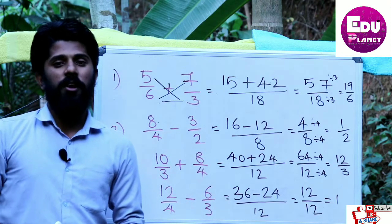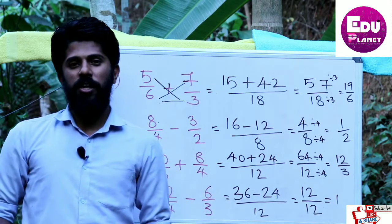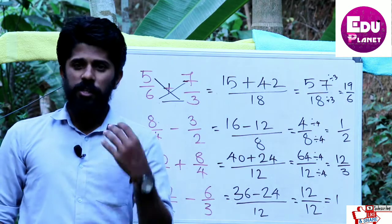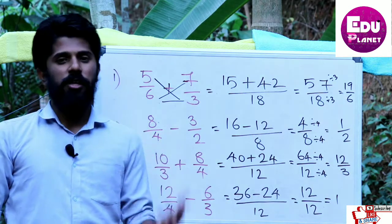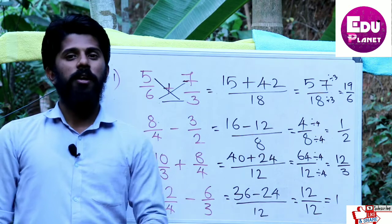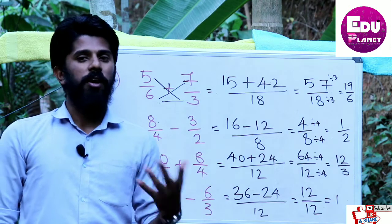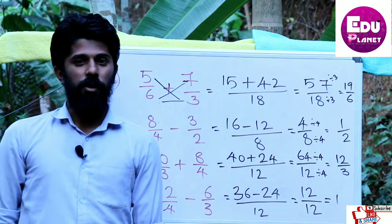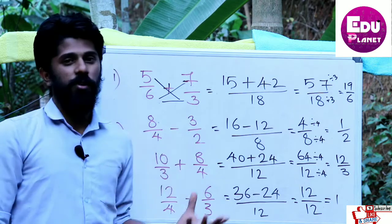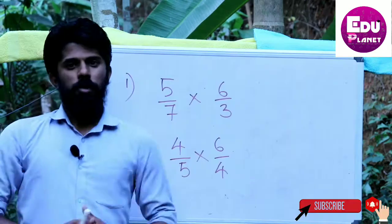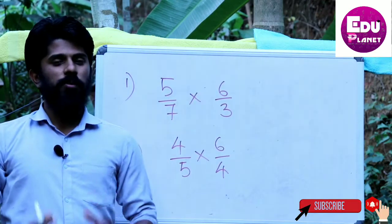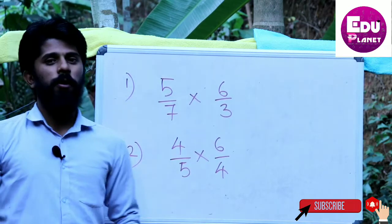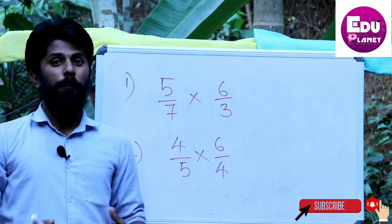If the denominators are the same, you do it directly. If they are different, you use the cross multiplication technique. There are different methods — some people use different instruments or approaches. You can learn whichever method suits you for fraction addition and subtraction.